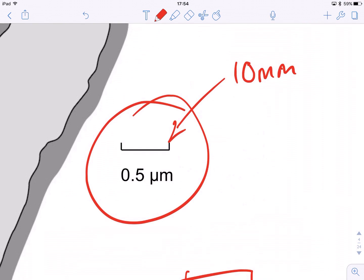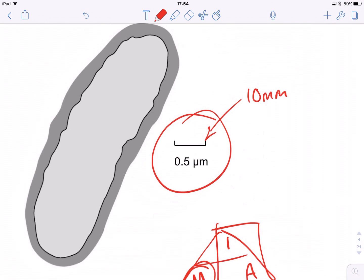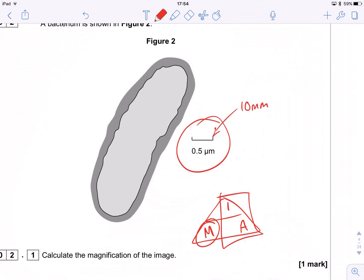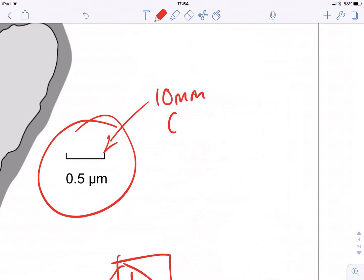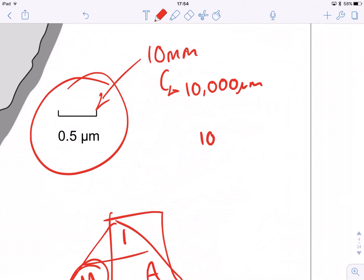Okay, so what we need to do, we need to convert one of these numbers, one of these sizes, such that it's in the same units as the other one. So I'm going to convert millimetres to micrometres, so that's times by a thousand. So 10 millimetres is 10,000 micrometres. Then all it's a case of doing is 10,000 divided by 0.5 and that will give us our answer of 20,000 times bigger.